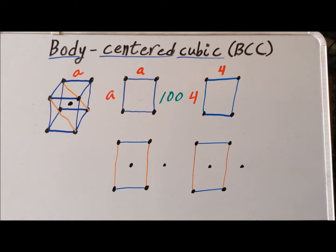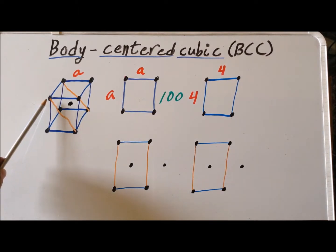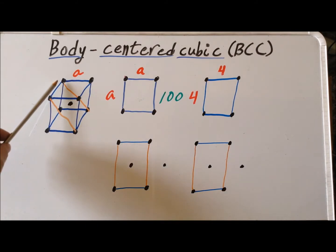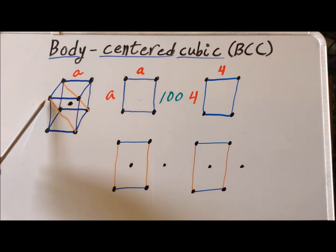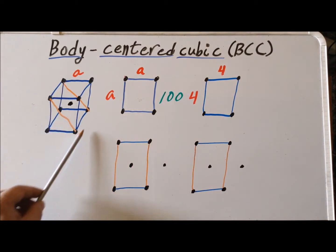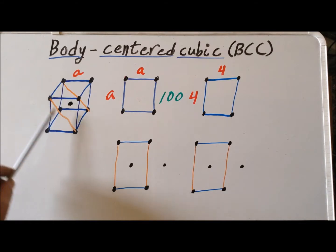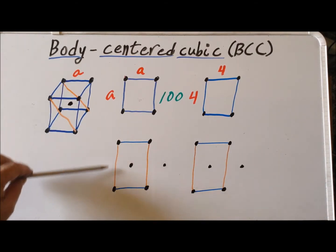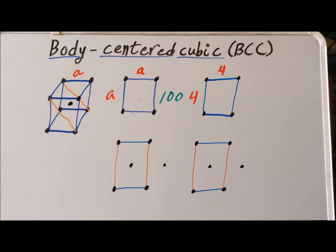We can see the 110 plane highlighted with these orange lines here. So if we cut along the blue line here, this particular edge, and come along the diagonal, the orange, and terminate here — this particular plane, which we're shown in a top view here — this is the 110 plane for a body-centered cubic.